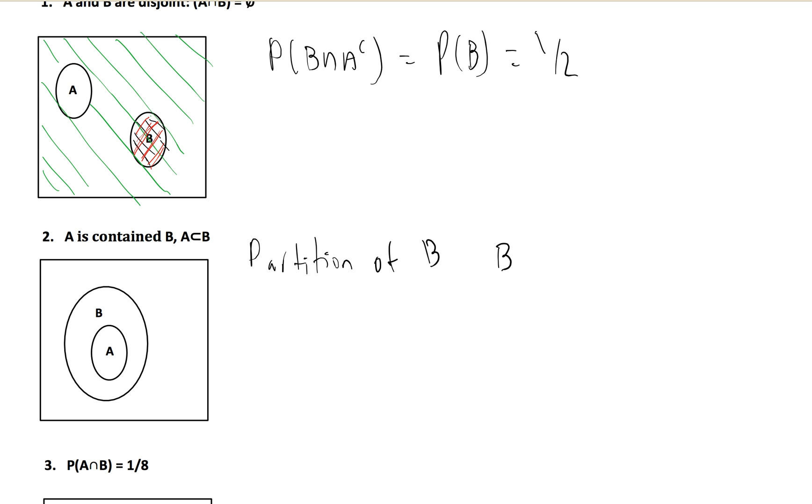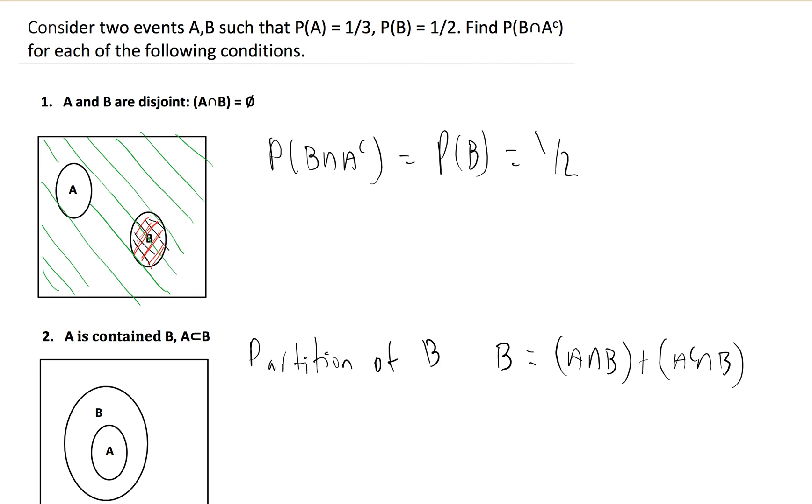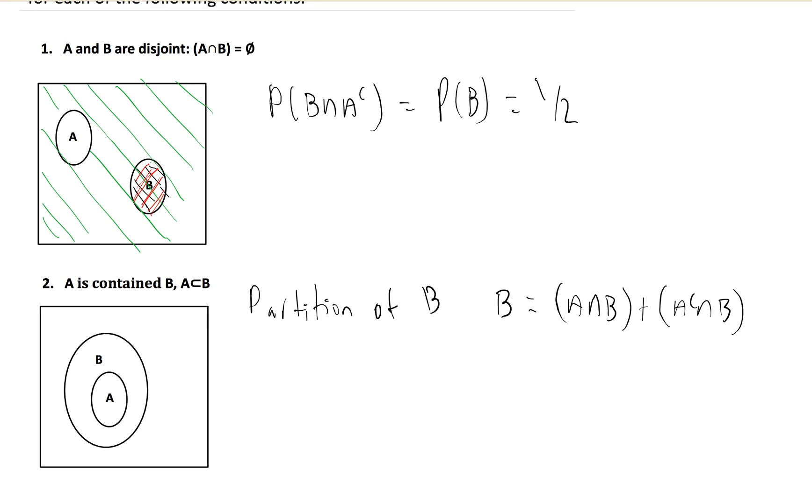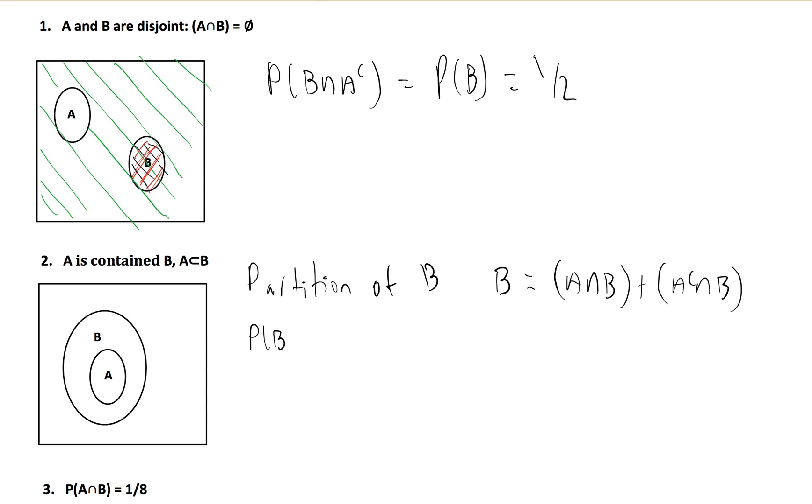Partition of B, which simply states that B as a set is equal to the union of A intersection B plus A complement intersect B. Now we have to figure out what each one of these are. What we want is A complement intersection B. So we can rewrite this in terms of probability and say the probability of B equals the probability of A intersect B plus the probability of A complement intersect B.